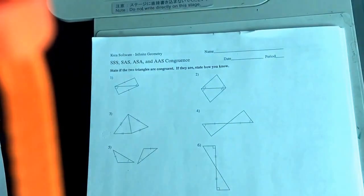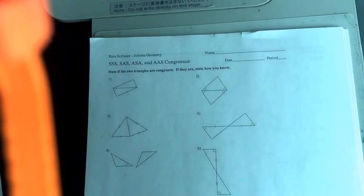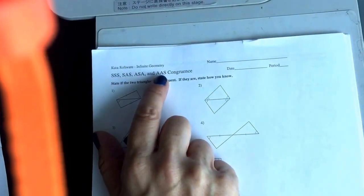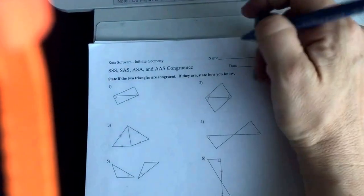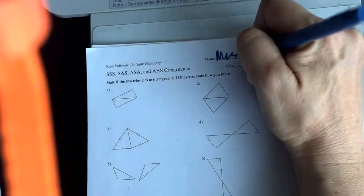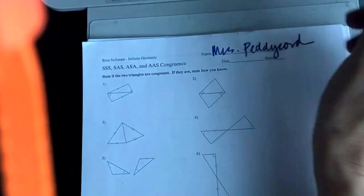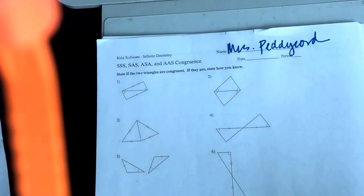All right, in order to help you guys do some corrections on an assignment that you had, the SSS, SAS, ASA, and AAS congruence, I want to just give you a few hints. This was actually graded and corrected. I made check marks for things that were right or wrong.